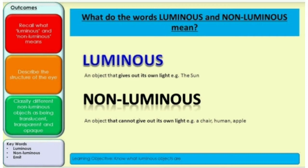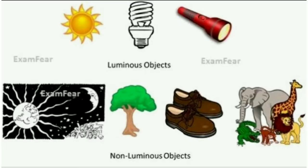Luminous objects are those which can emit light of their own - objects that discharge or produce their own light. Examples of luminous objects include the sun, stars, bulb, firefly, burning candle, and jellyfish.